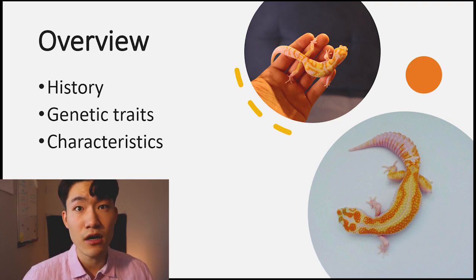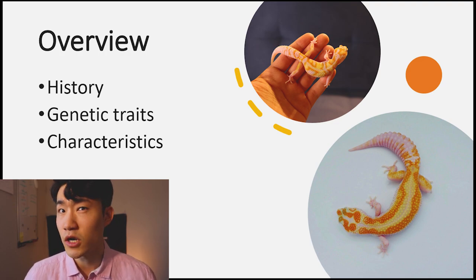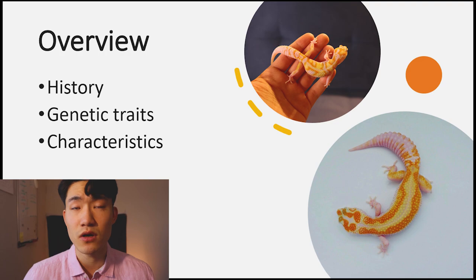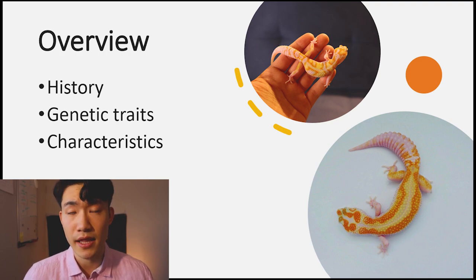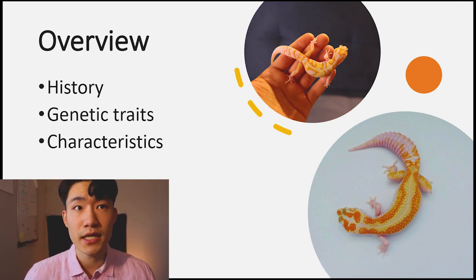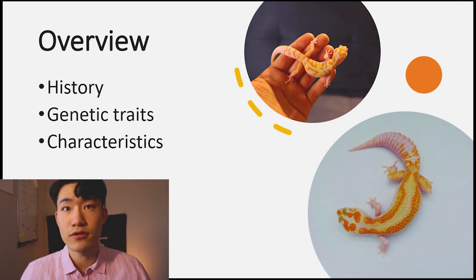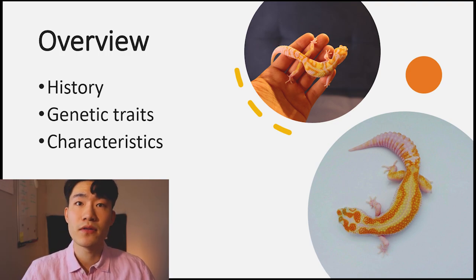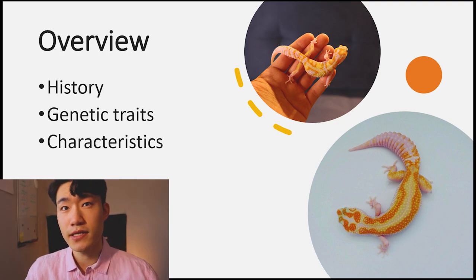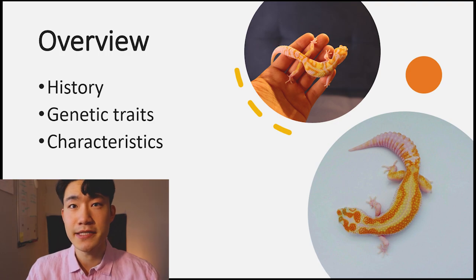The second topic is genetic traits — whether it's going to be recessive, incomplete dominant, dominant, or polygenetics, which is also called linebred. That's something I'm going to go over for the WY genetics. Thirdly, there's going to be the effect that happens when you mix WY with other types of leopard gecko morphs. So let's get into it.